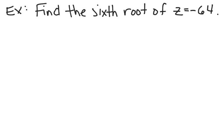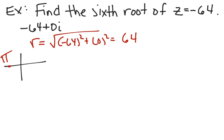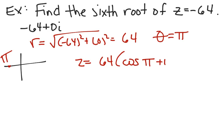Let's find the sixth root of z = −64. That's really the complex number −64 + 0i. The modulus is √((−64)² + 0²) = 64. Since −64 is on the negative x-axis, the argument θ = π. So the polar form is z = 64[cos(π) + i·sin(π)].